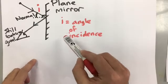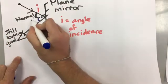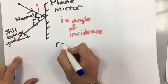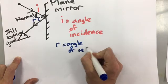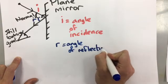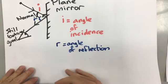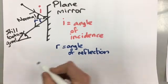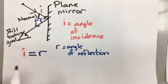We have another angle here called r, and r is the angle of reflection. In reflection from a mirror, i always equals r. They are always the same for reflection.